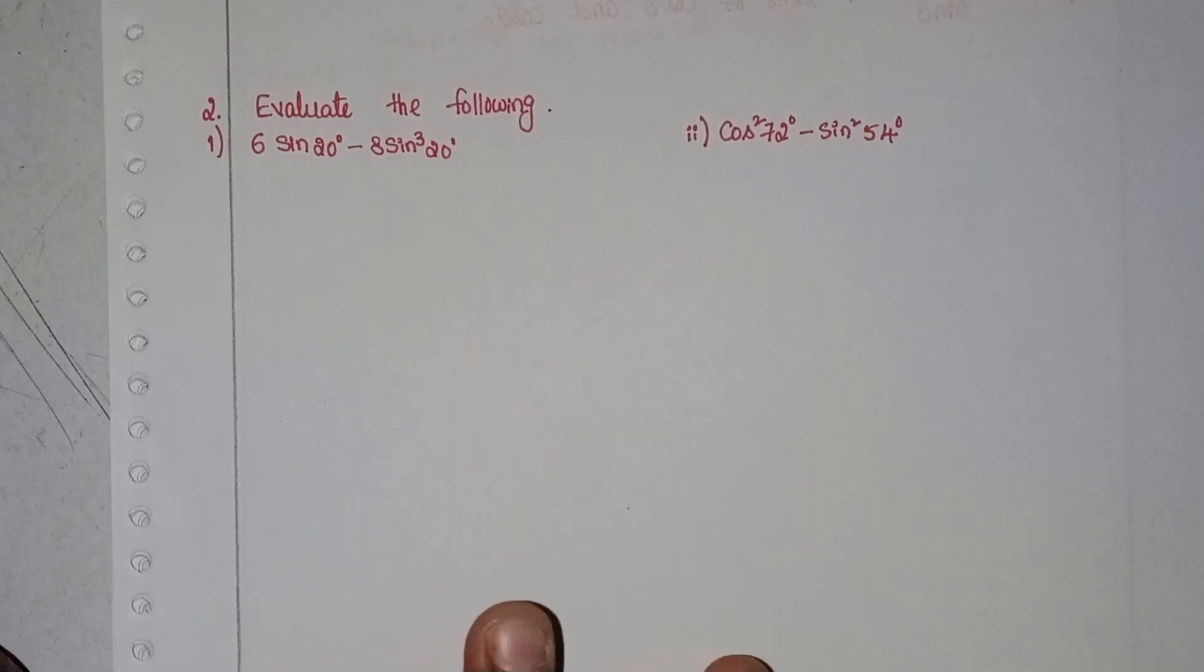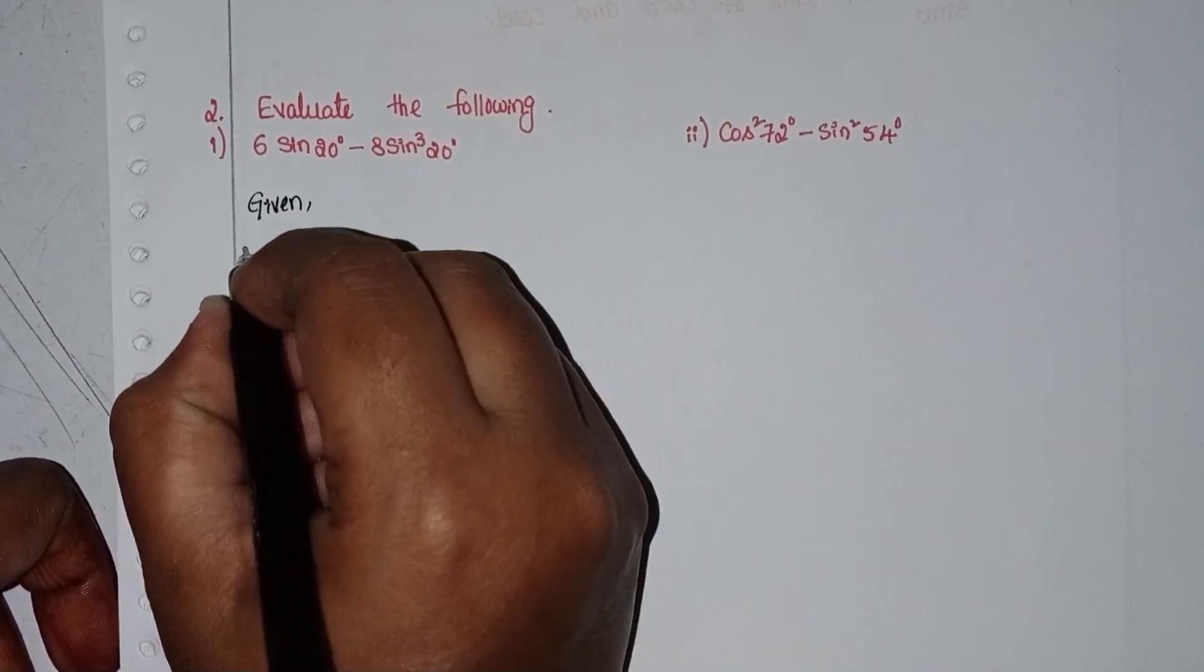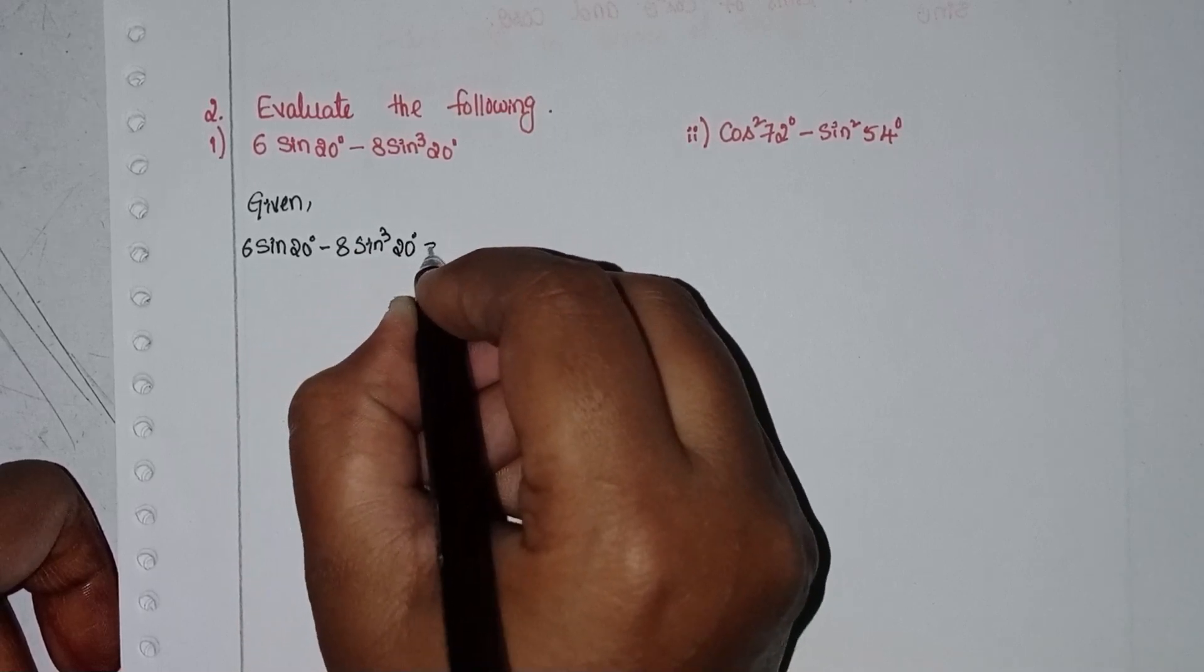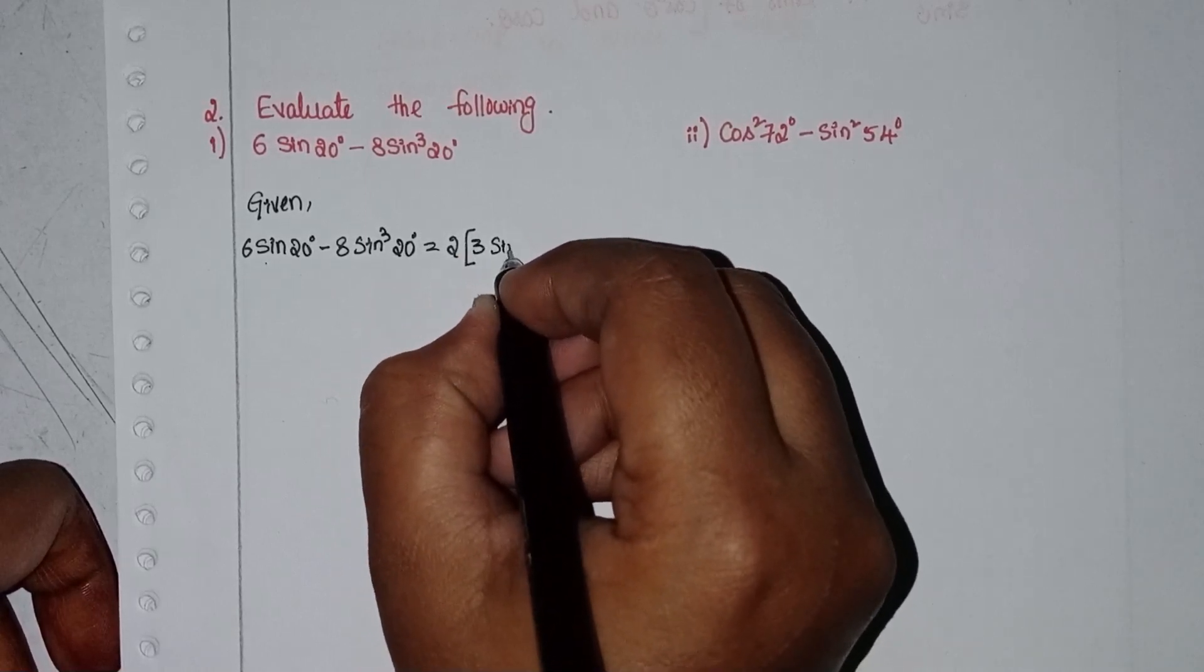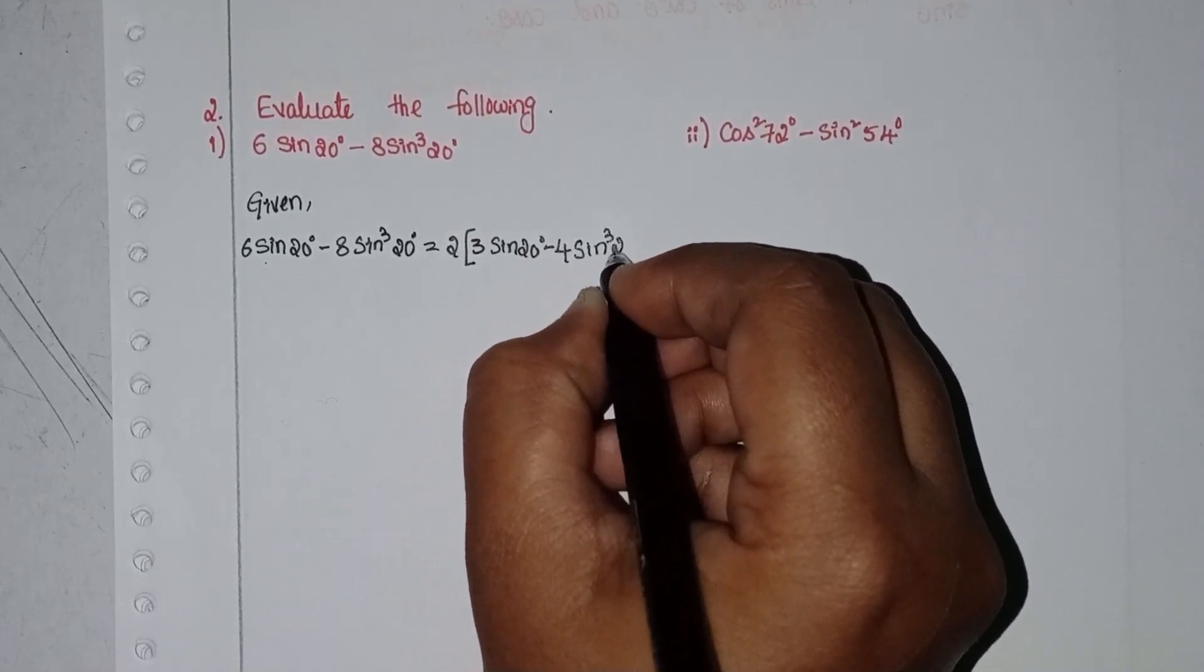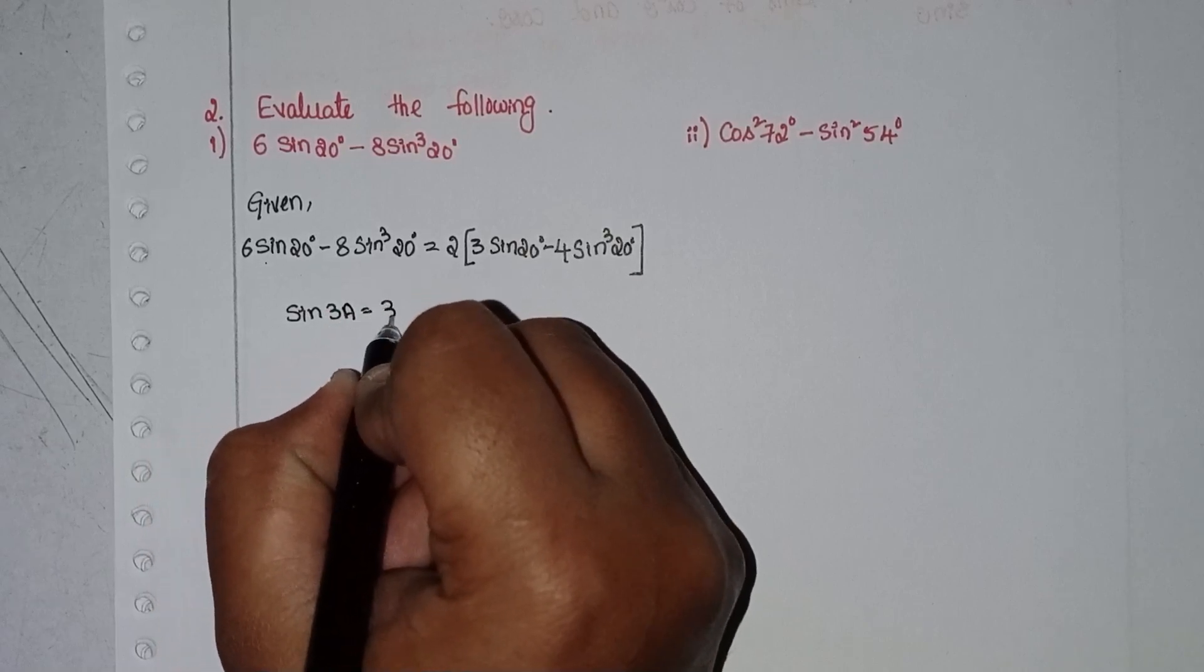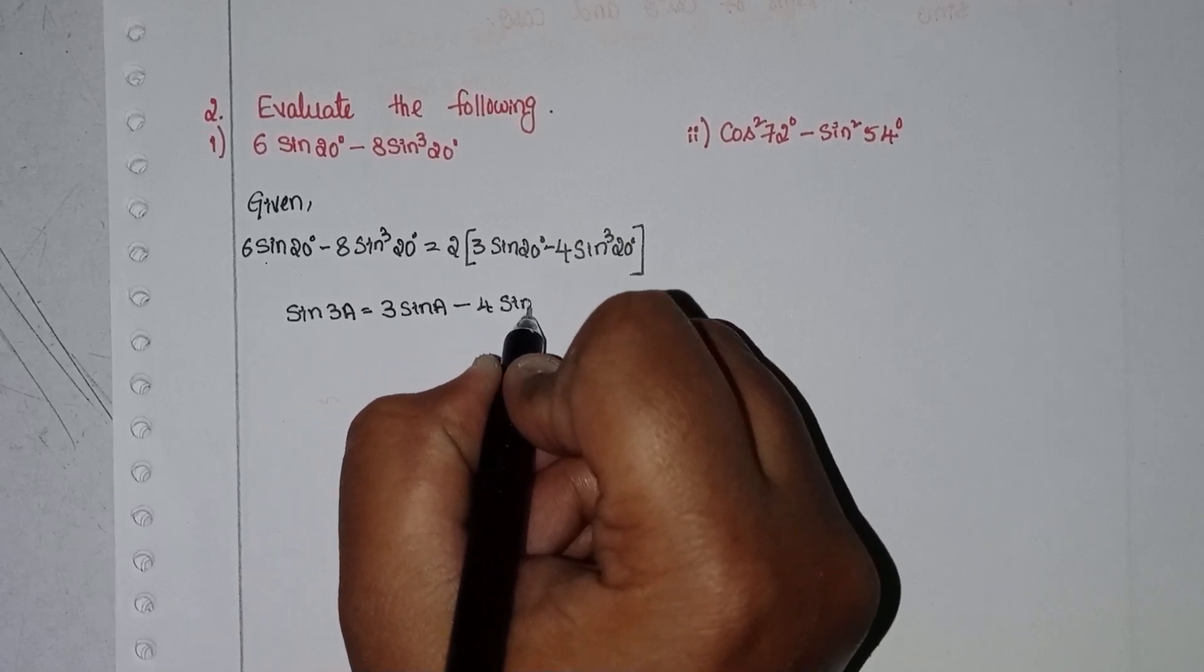Evaluate the following. Given 6 sin 20° - 8 sin³ 20°. We take 2 as common: 2 times (3 sin 20° - 4 sin³ 20°). Now we use the sine 3a formula: sin 3a = 3 sin a - 4 sin³ a.